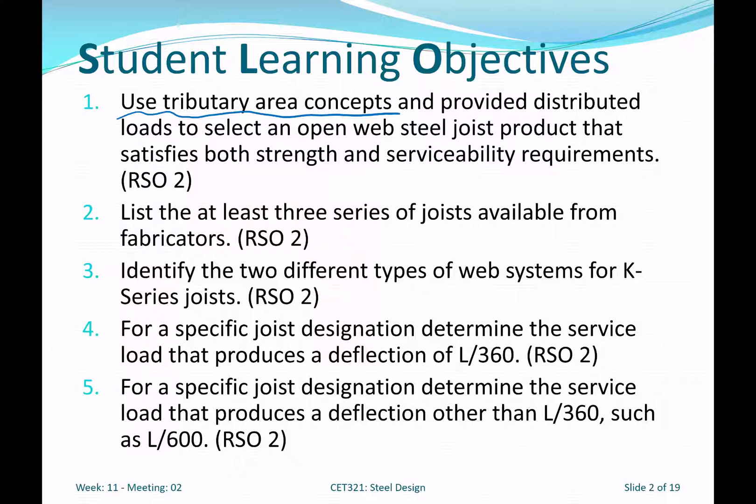There are at least four different series of steel joists. If we were to dig a little deeper, we'd find at least a fifth that isn't really part of the typical joist series. Different producers and manufacturers provide additional types of joists.